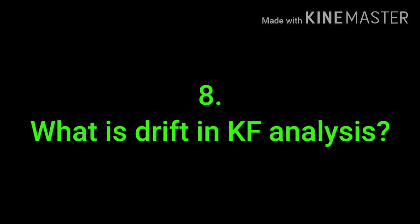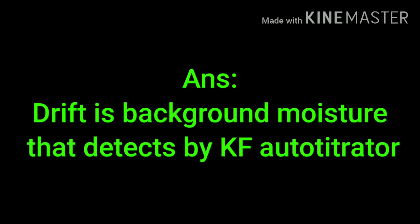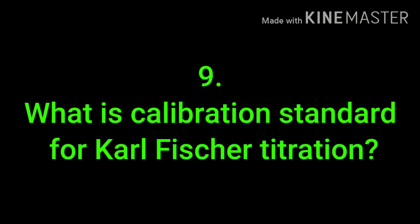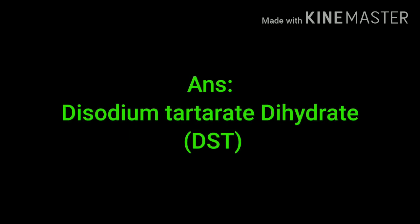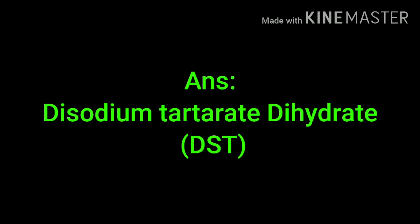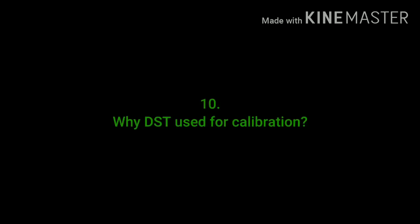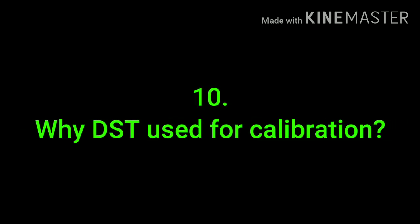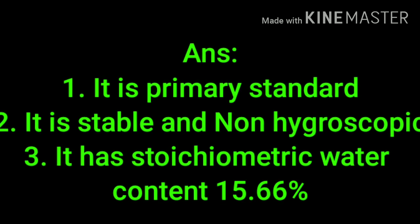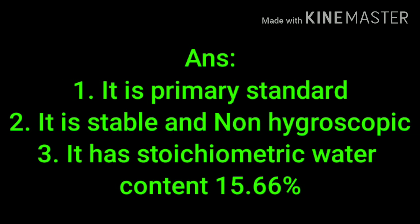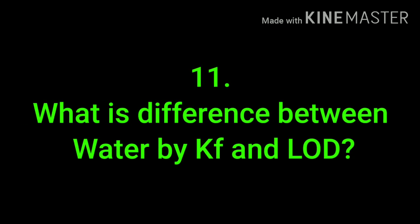What is drift in KF analysis? Drift is the background moisture detected by the KF auto titrator. General analysis will start only when the drift is stable. What is the calibration standard for Karl Fischer? The calibration standard is disodium tartrate dihydrate (DST). DST is used for calibration because it is a primary standard, it is stable and non-hygroscopic, and it has a stoichiometric water content of 15.66 percent.